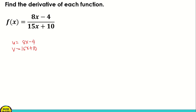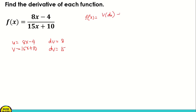So once we've identified u and v, let's get their derivatives. The derivative of du: the derivative of 8x is 8, and the derivative of negative 4 is 0, so it's just 8. The derivative of dv: the derivative of 15x is 15, and the derivative of 10 is 0, so it's 15. Then we're going to apply the formula: f prime of x equals v times du minus u times dv, all over v squared.